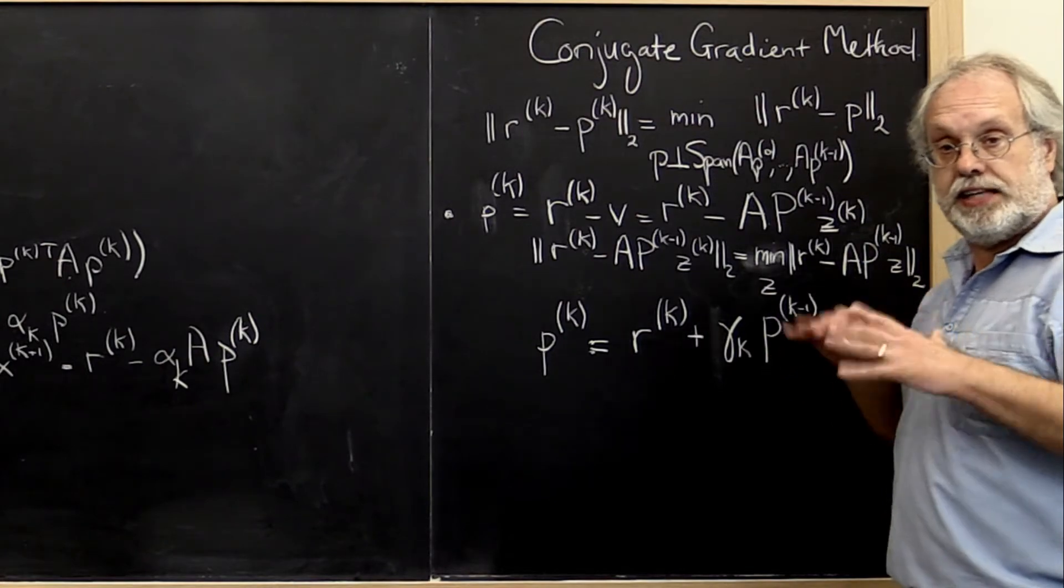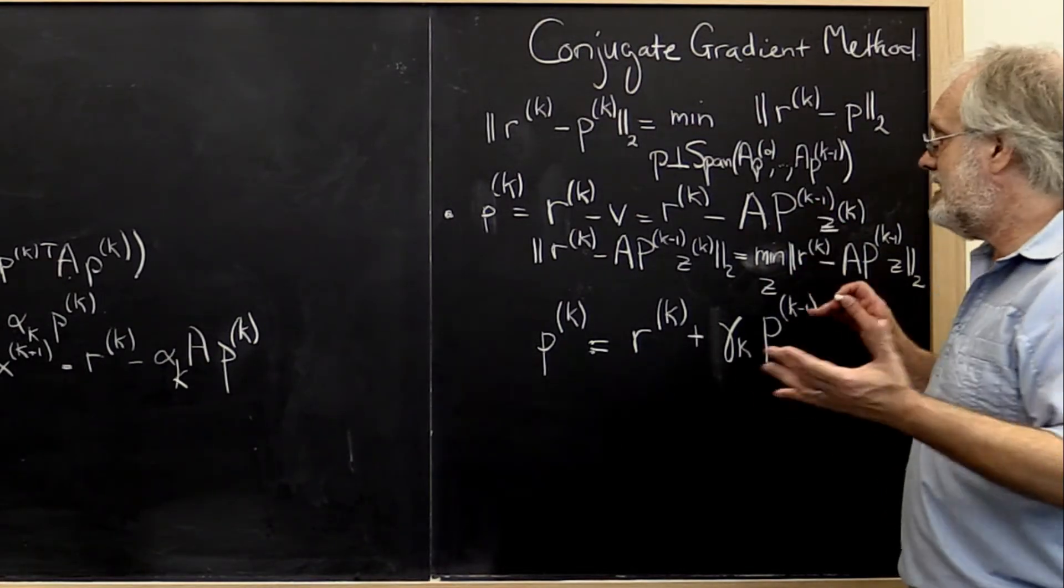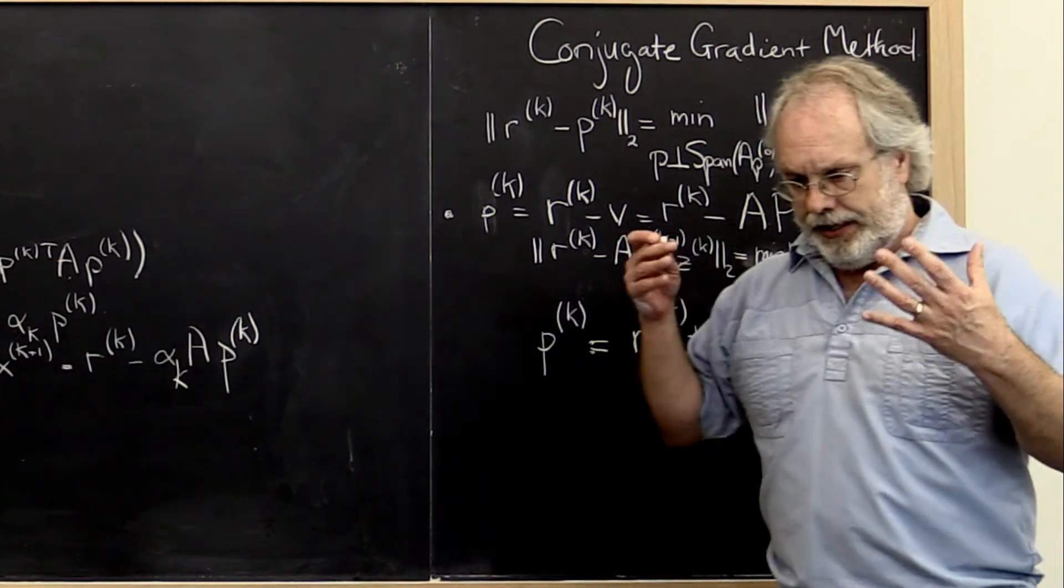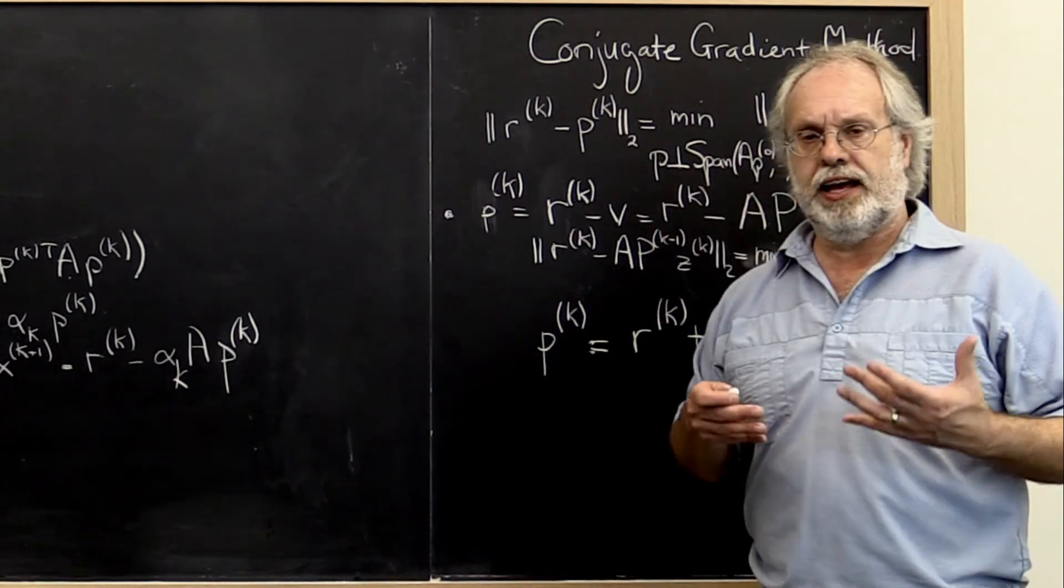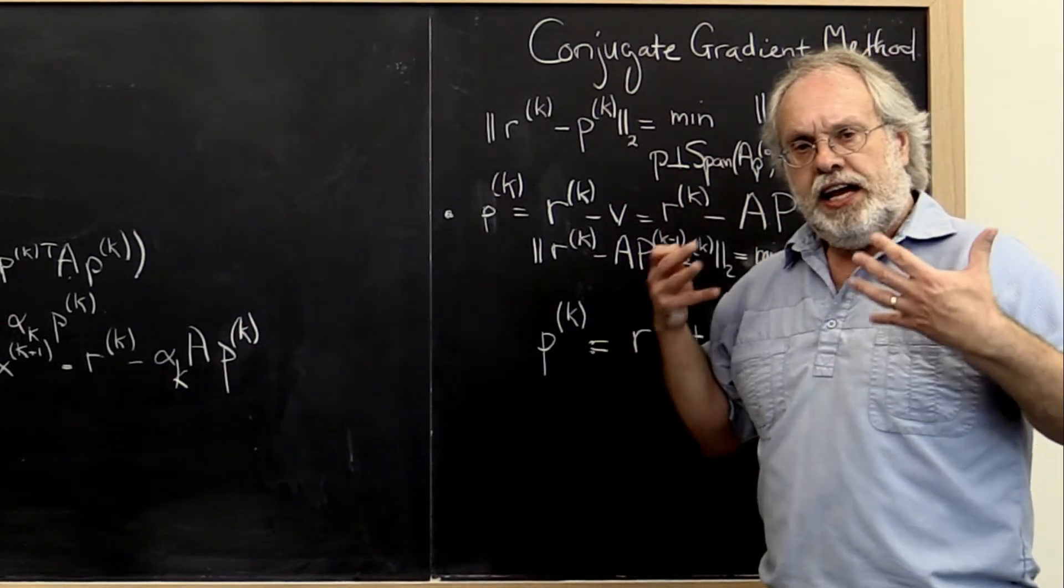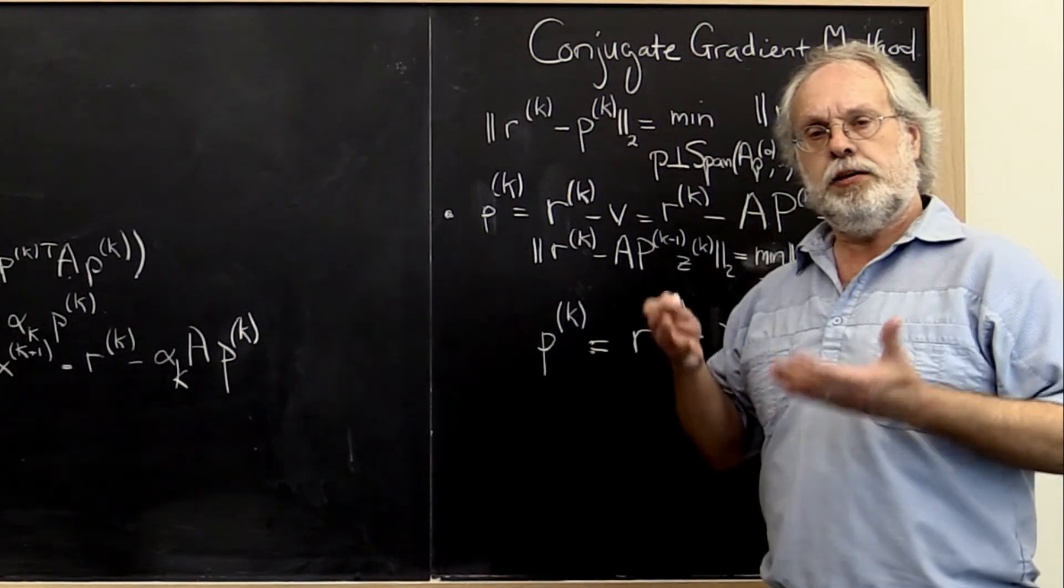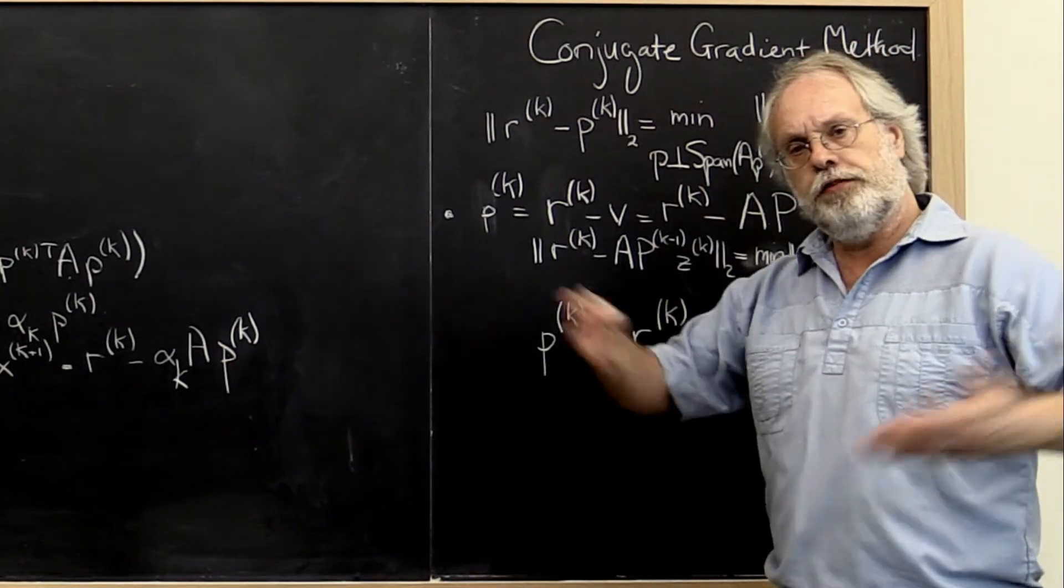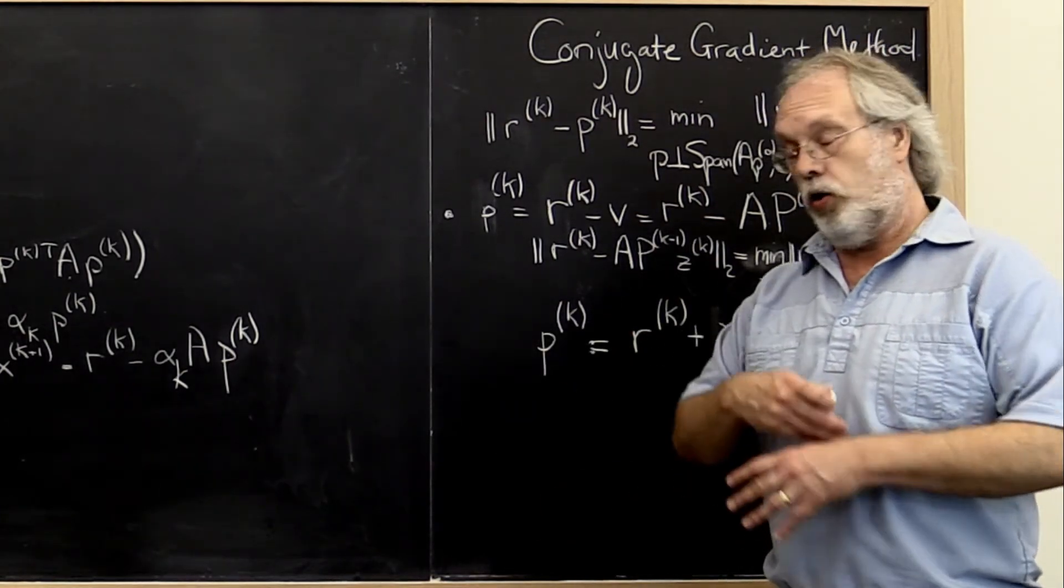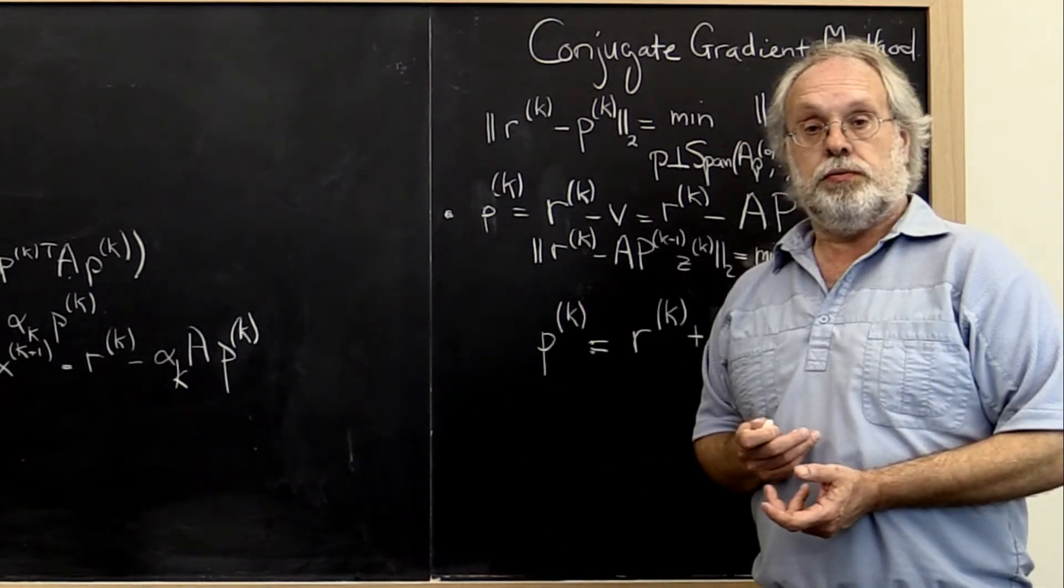And that is astounding. What it means is, yes, the conjugate gradient method has memory in the sense that we inherently are finding the minimum over the span of all of the previous search directions.